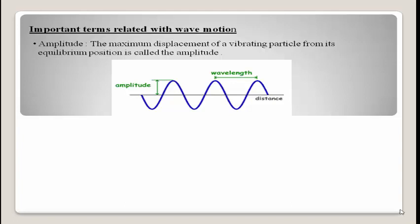The amplitude is indicated by the vertical line shown in green color in the diagram. That vertical straight line represents the amplitude, which is the maximum displacement of a vibrating particle taken from the equilibrium position. Amplitude is denoted by capital A or small a, and its SI unit is meter.